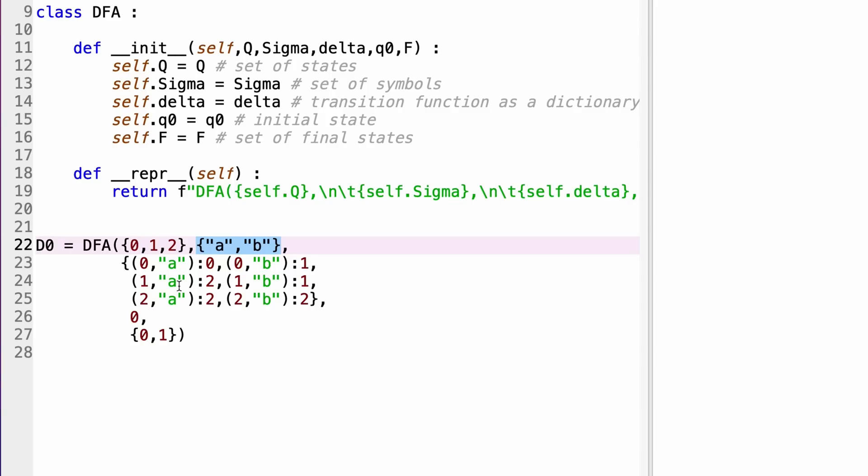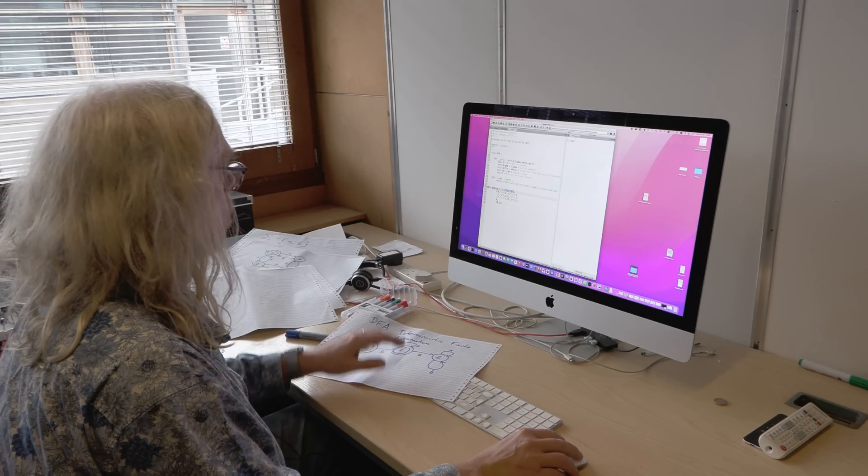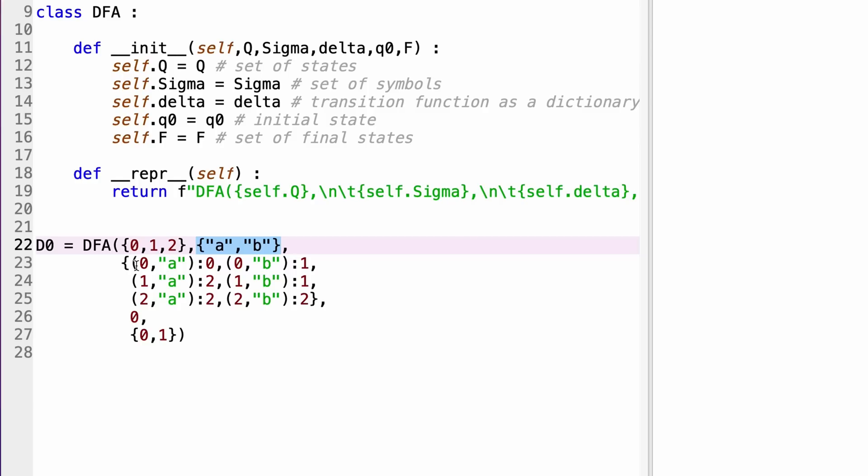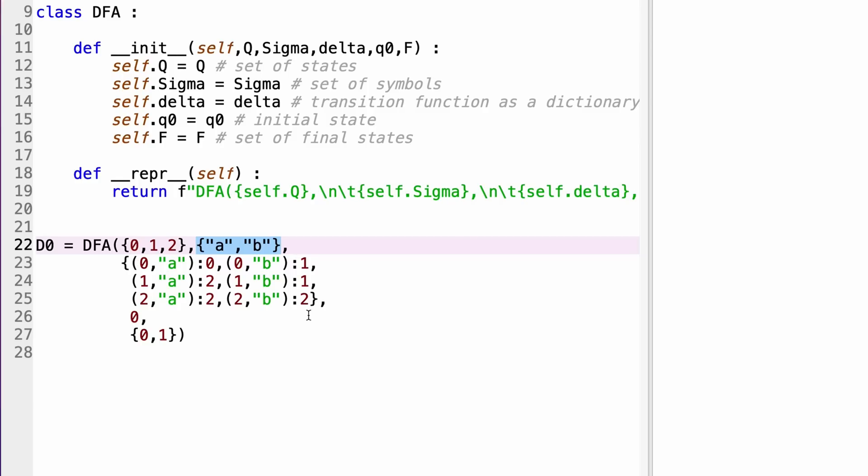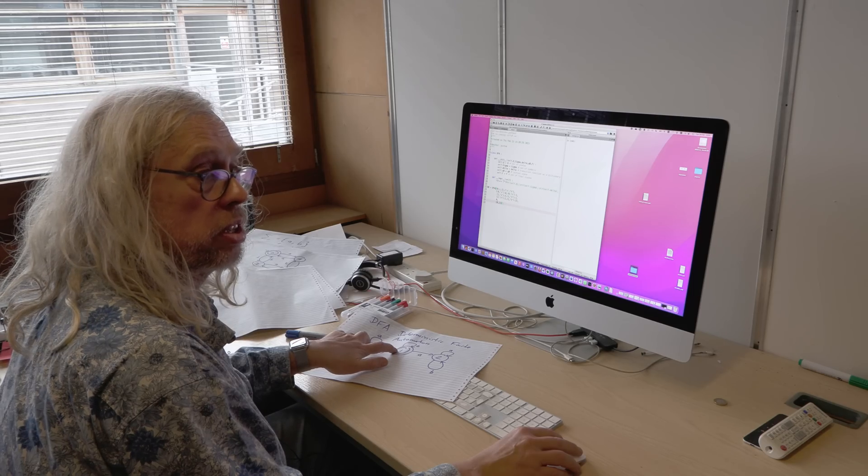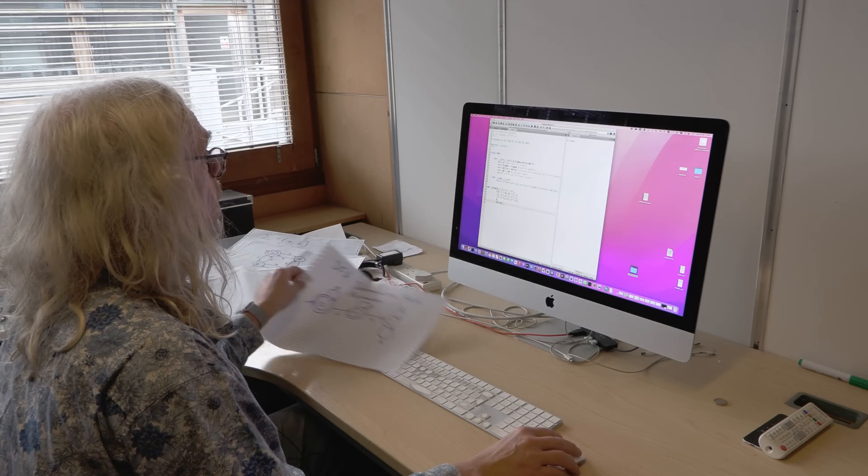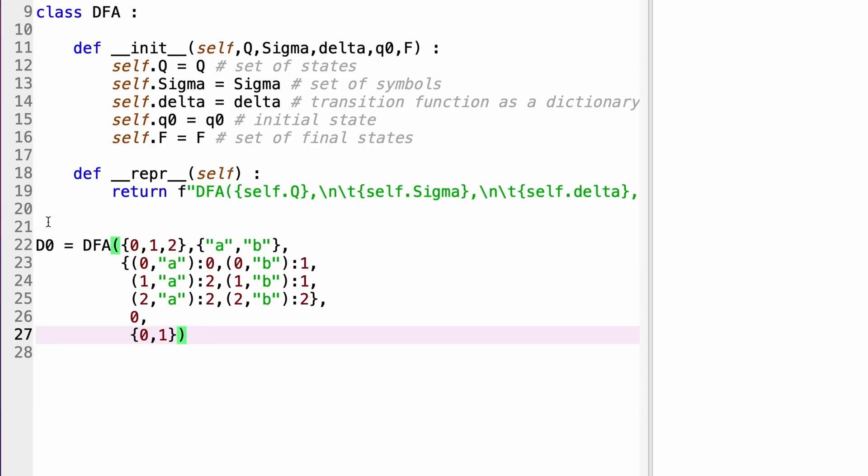And here is our table. I define the automaton which implements exactly this automaton. So it says okay, from 0 if you see an a you get a 0. From 0 if you see a b you're going to state 1. And so on - from 1 if you see an a you go to 2, and so on. So I've just encoded this little graph as a dictionary in Python. And I say 0 is the initial state, and 0, 1 is a set of final states.